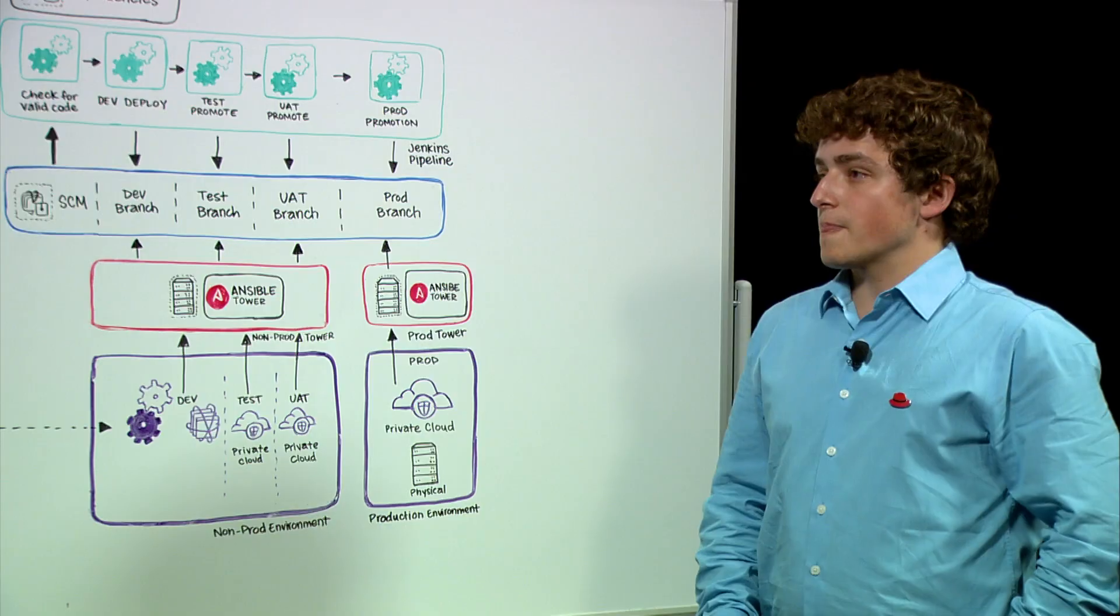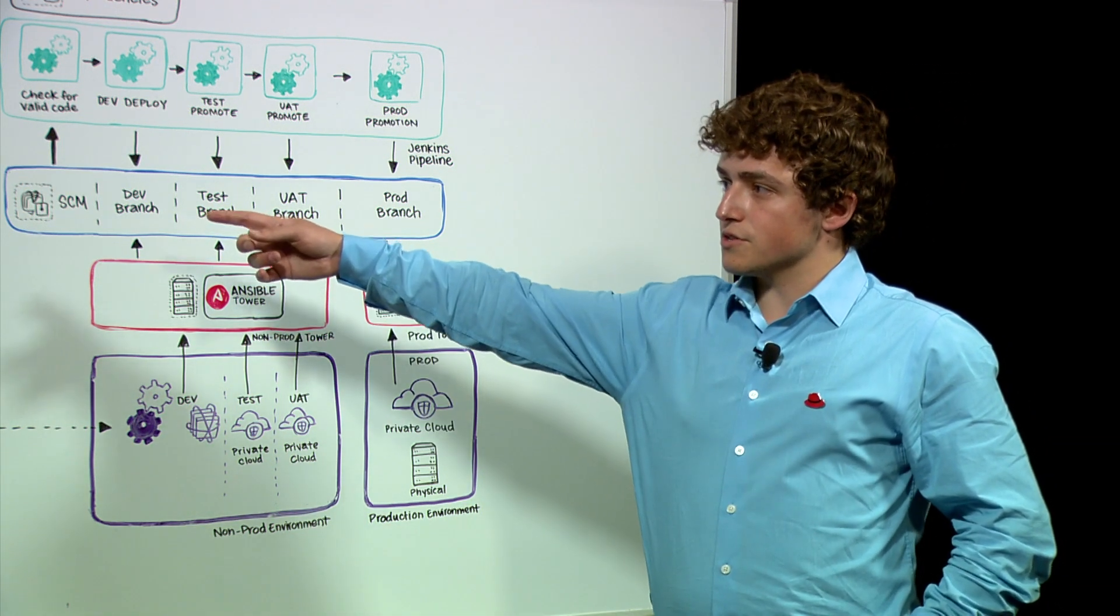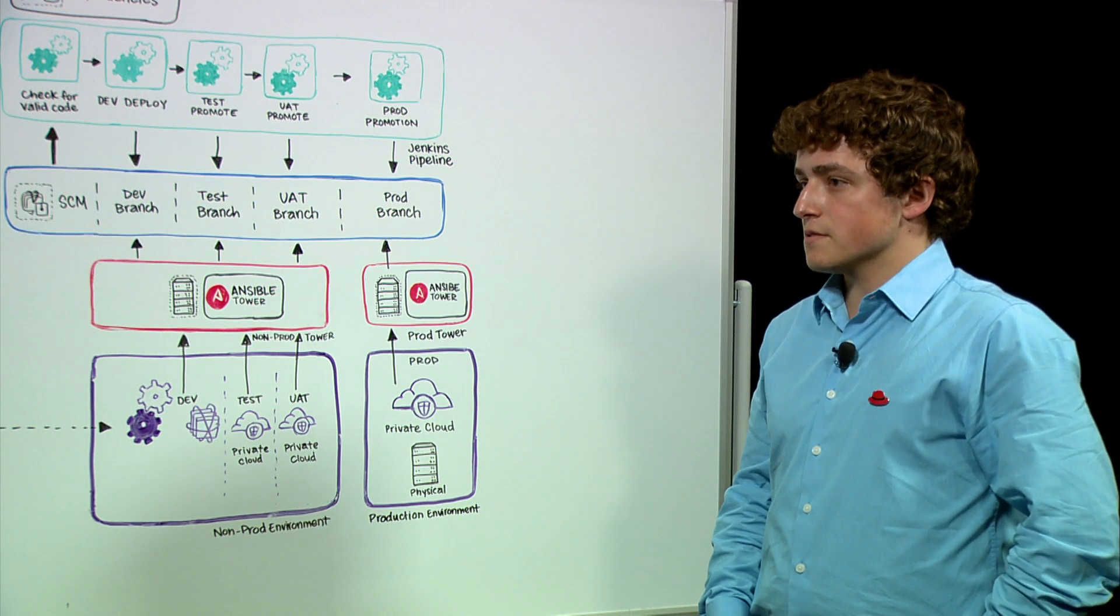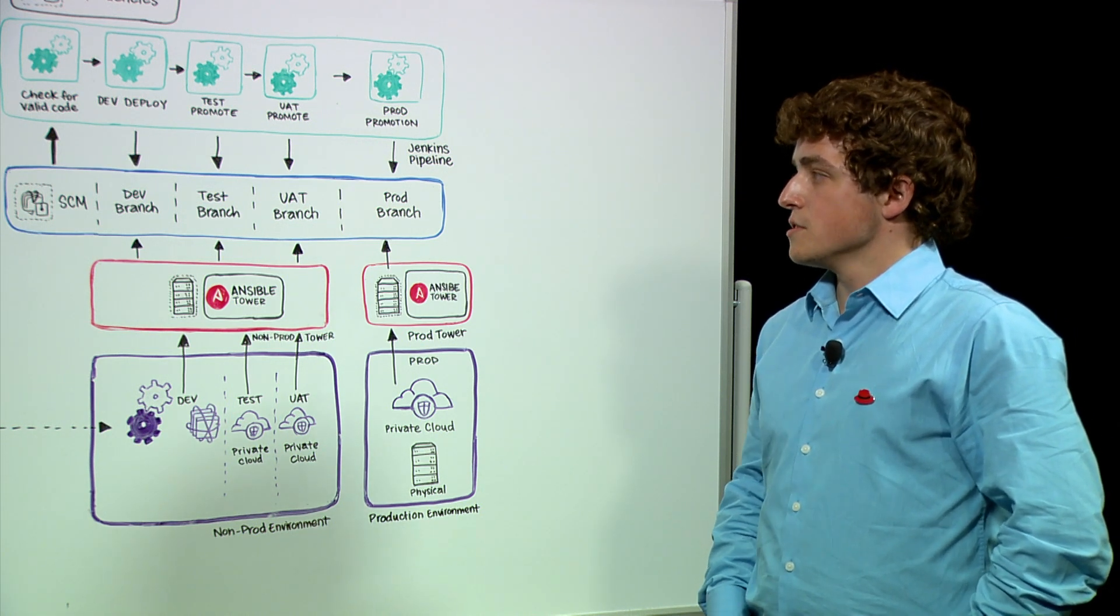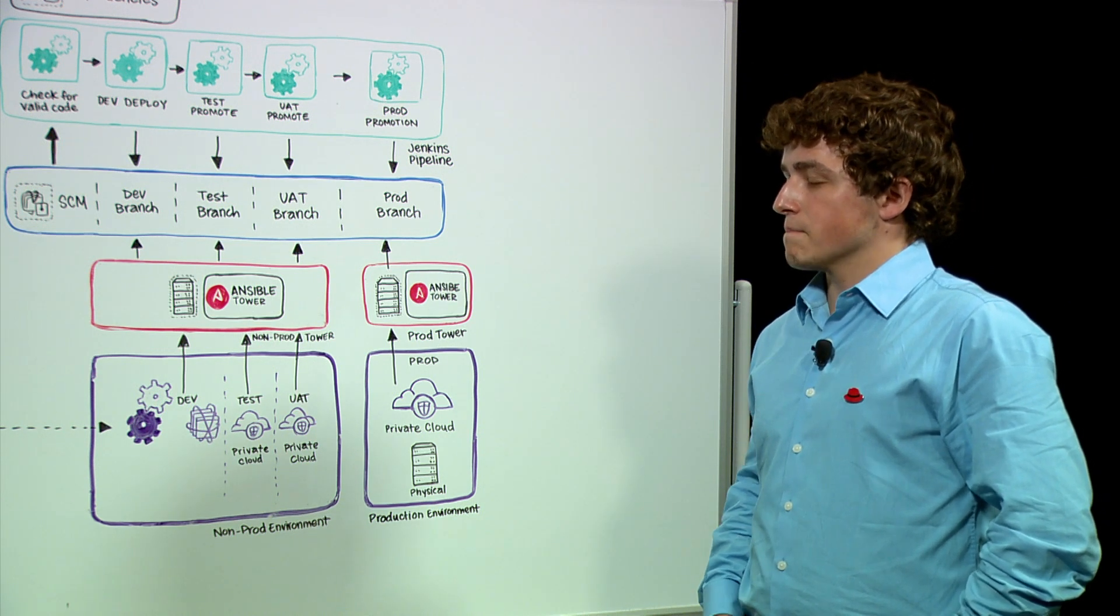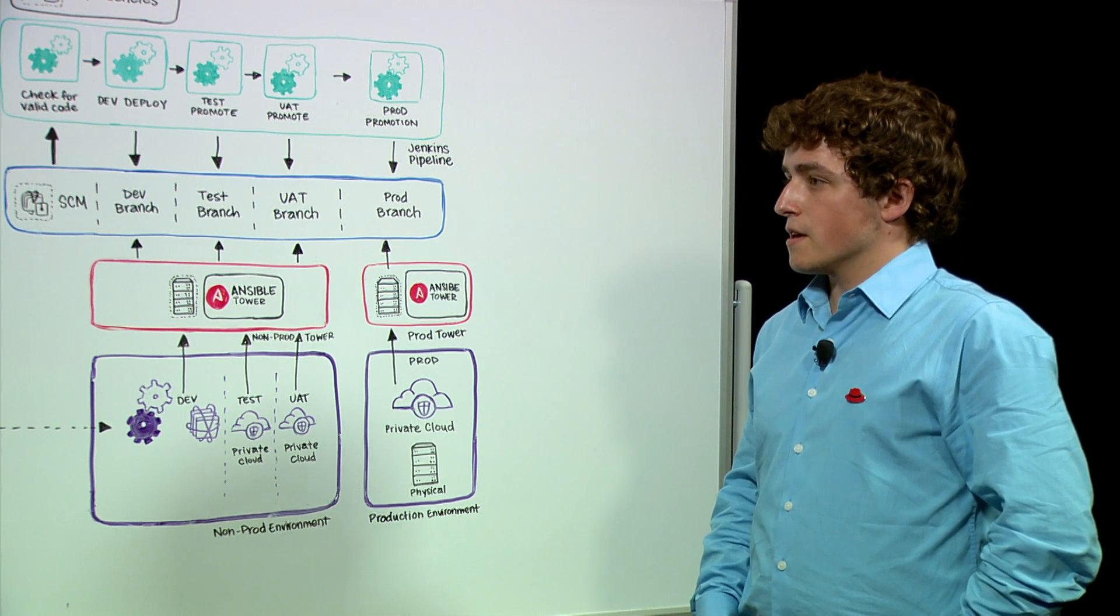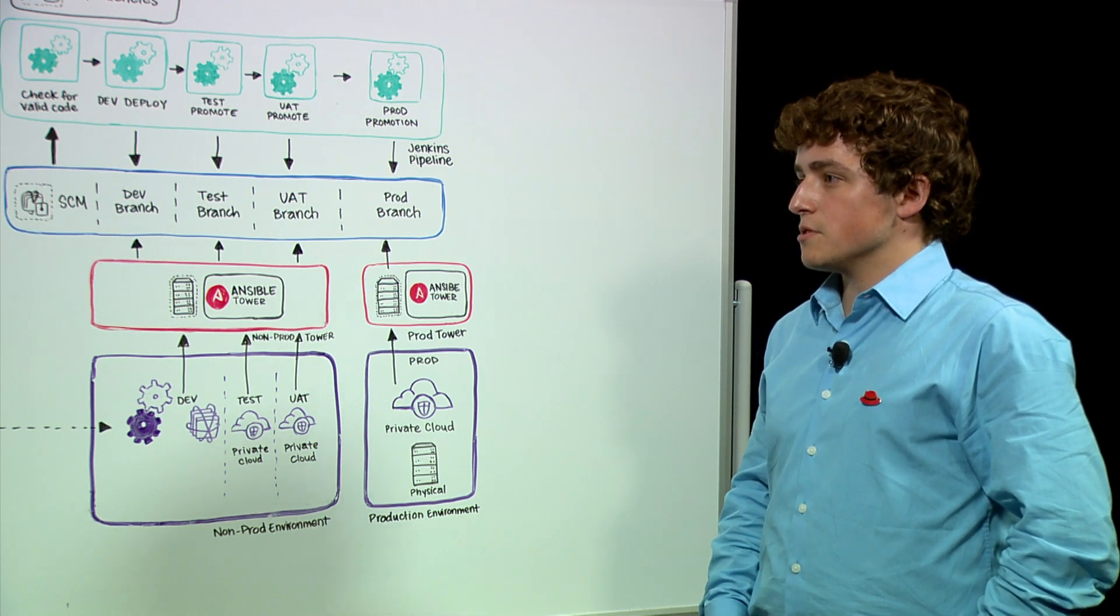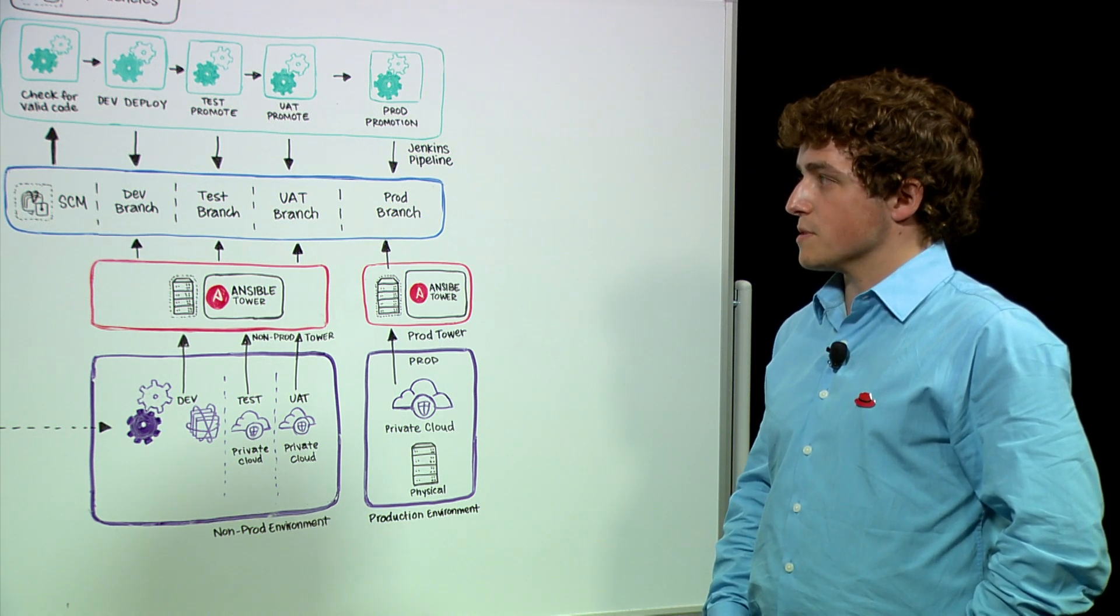Yeah, so as developers develop their code they would put their code into a source control manager such as Git and GitHub. Once they push the code to Git it will go through validation by Jenkins or whatever other CI tool you're using watching that Git repo and deciding that it needs to perform code once a push is made.